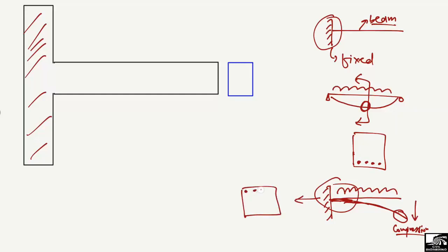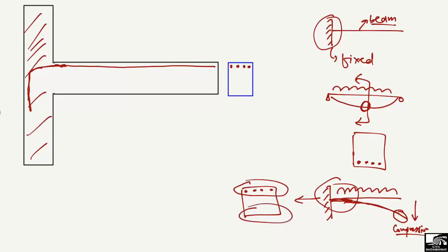Drawing the cross section of the cantilever beam, we have to provide the reinforcement at the top section because we have negative bending moment there — the tensile stresses are at the top. This is why the main reinforcement in a cantilever beam is always provided at the top, and it is mostly extended into the column to achieve a fixed joint. The top section is in tension while the bottom section is in compression.